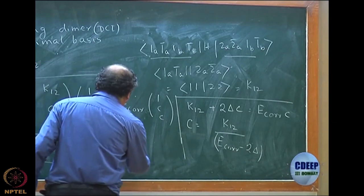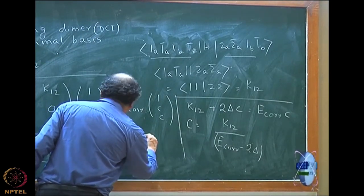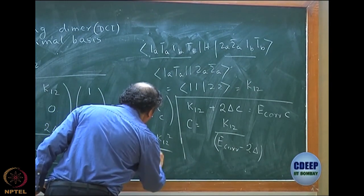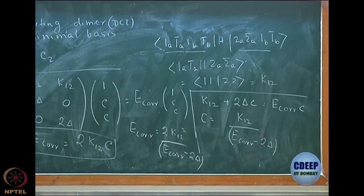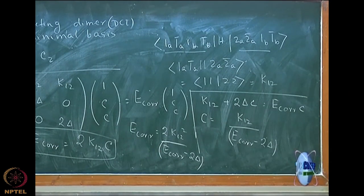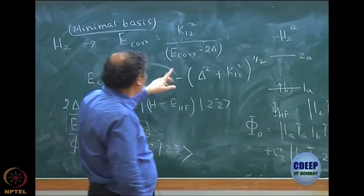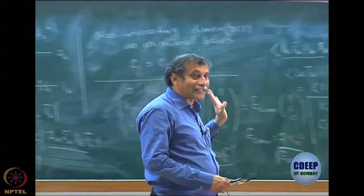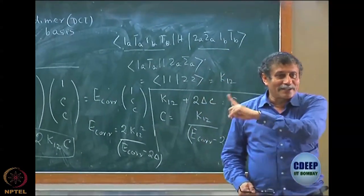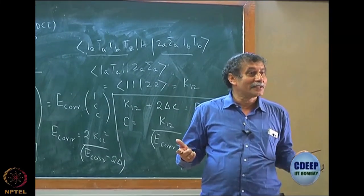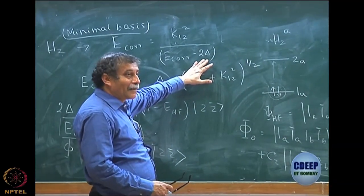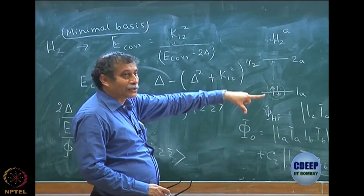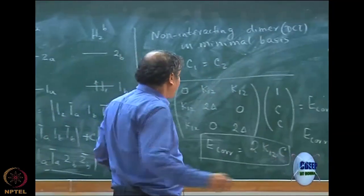Substituting back, the equation becomes E-correlation equals 2 times K12 squared divided by (E-correlation minus 2 delta). It is exactly the same as the monomer except multiplied by 2. But when I solve the quadratic equation, the solution gives E-correlation equals delta minus the square root of delta squared plus 2K12 squared. The 2 has come inside the square root instead of multiplying the whole expression.